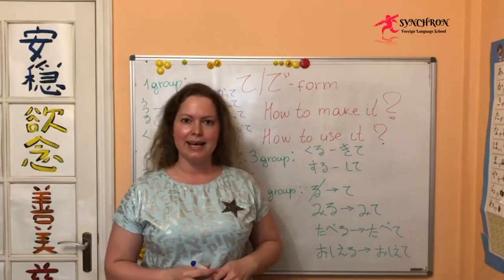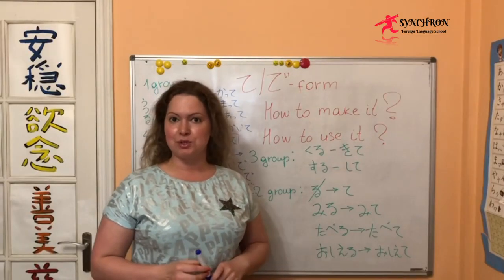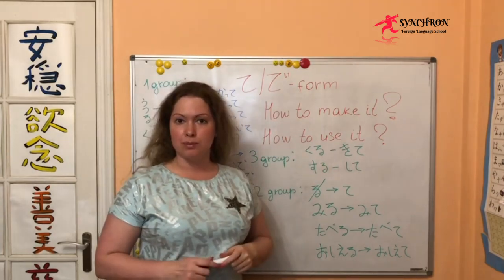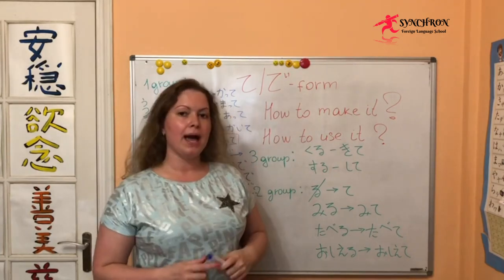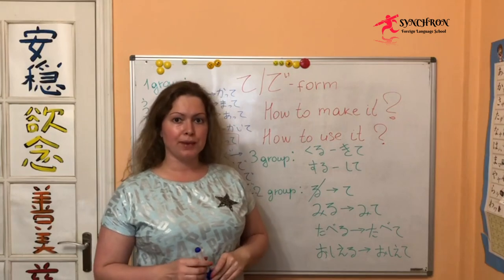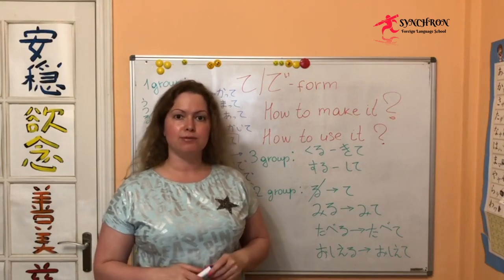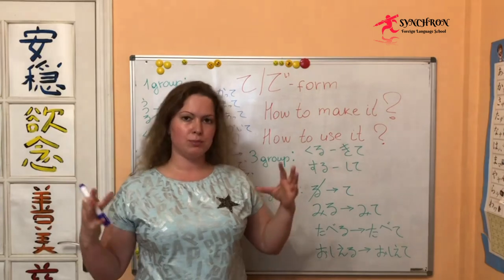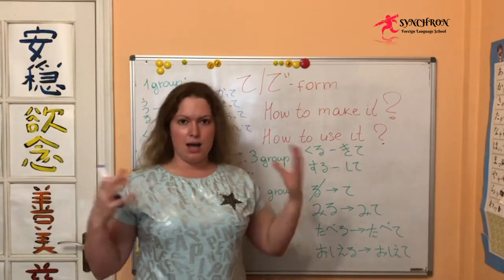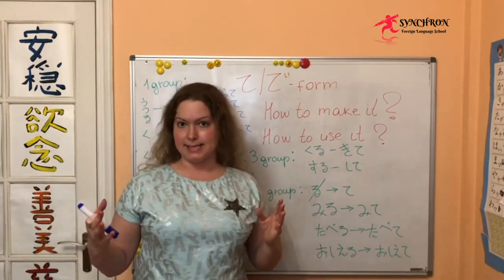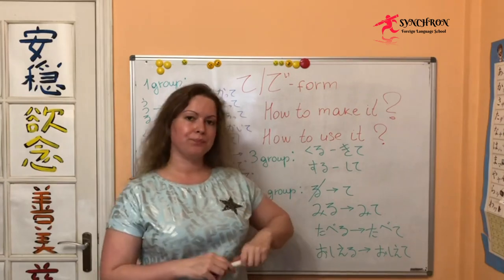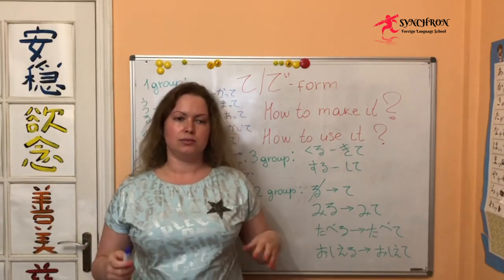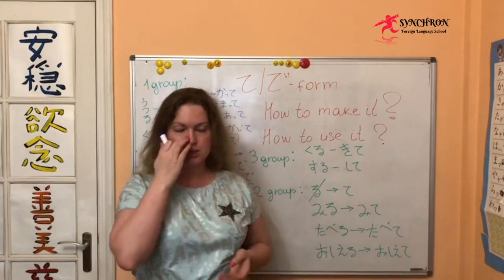Hi everyone, I'm Polly. Let's do some Japanese. Today we are going to talk about the form of Japanese verbs. In my last video, which was about Japanese verbs conjugation, I told you that there are three groups of Japanese verbs, and every group has five bases, five forms, which we need to make all grammar constructions in Japanese.